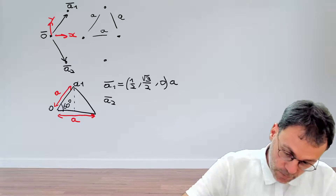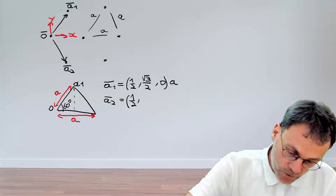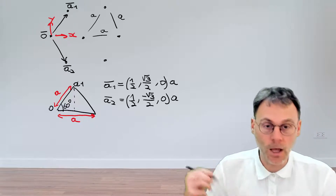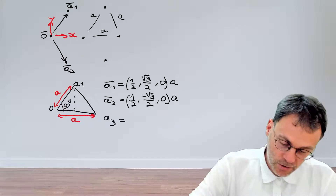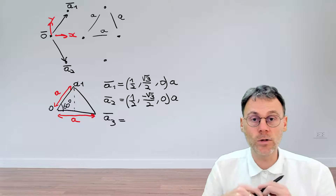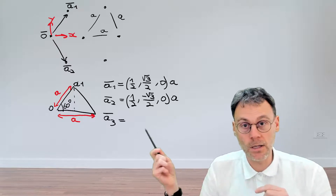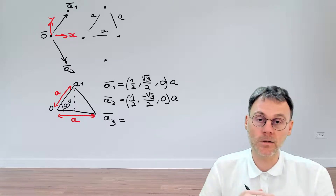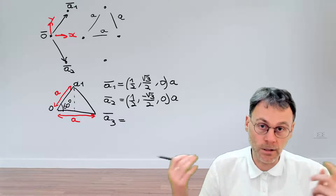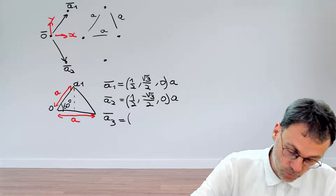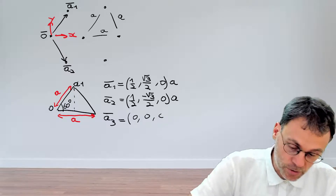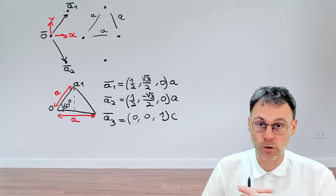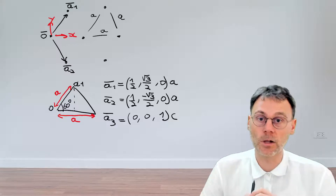A2 is going to be extremely similar — the only difference is that it's flipped, so we have a minus sign in the y-coordinate. For A3, the primitive lattice vector in the z-direction, we do not have any periodicity. But we still need this A3 component to use the formulas to calculate the reciprocal lattice vectors. So we're going to artificially pretend that the structure has a periodicity with a certain period, which we'll call C. This is an arbitrary choice, and it shouldn't play any real physical role.